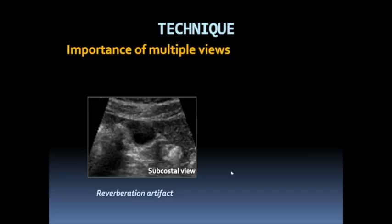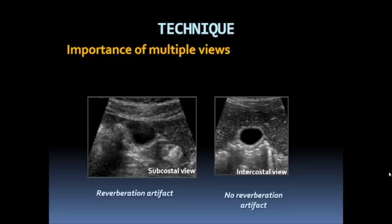This image illustrates low-level internal echoes within the gallbladder lumen from reverberation artifact, which we often see when patients are scanned from a subcostal view. A few moments later, scanning from a more lateral and superior approach using the liver as an acoustic window, we eliminate that reverberation artifact.